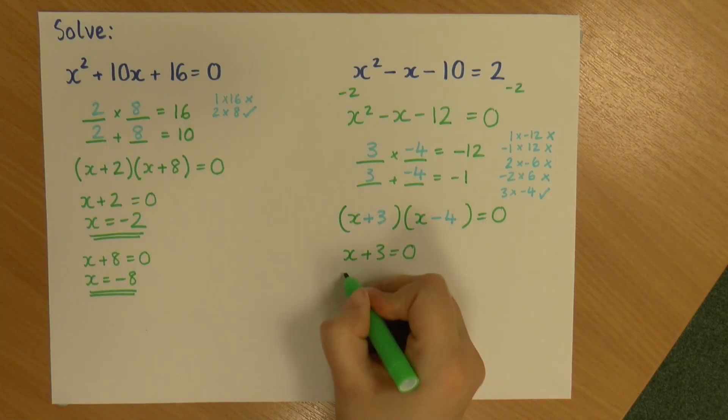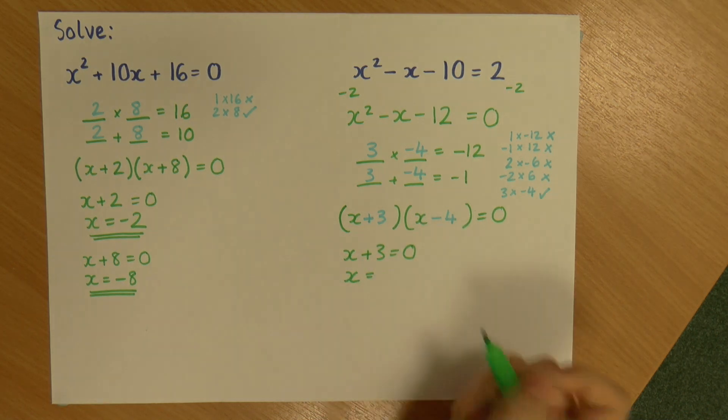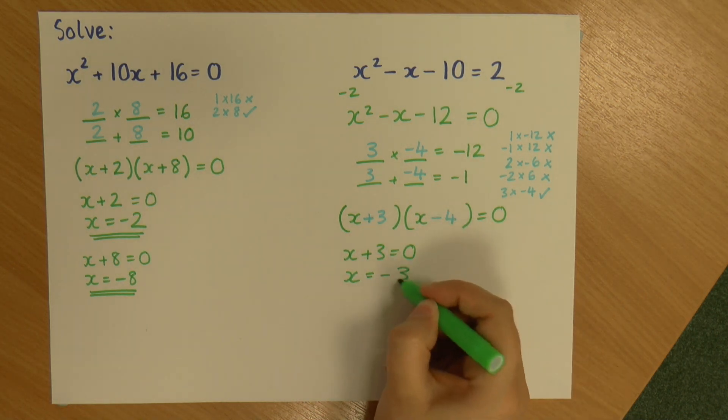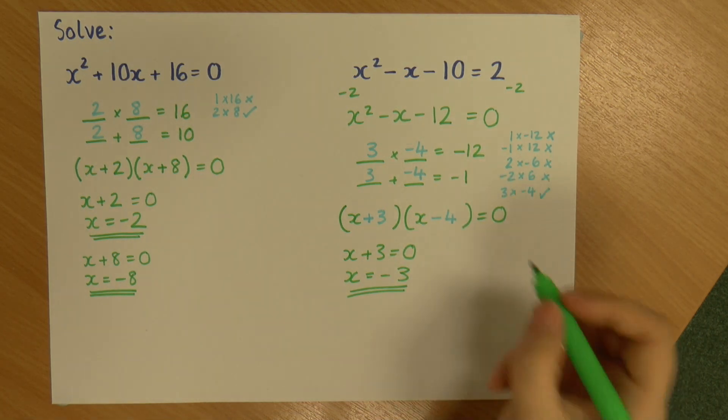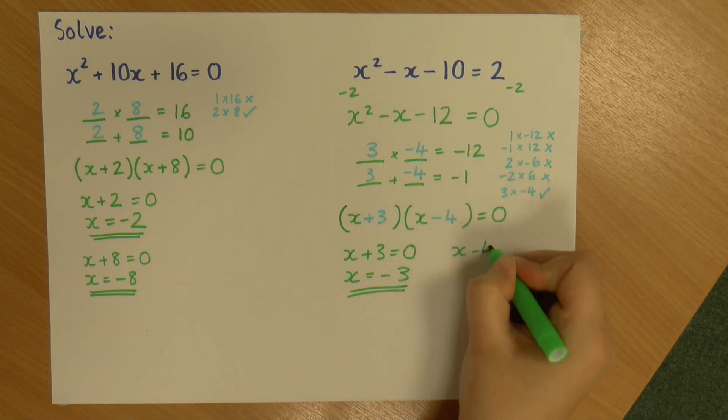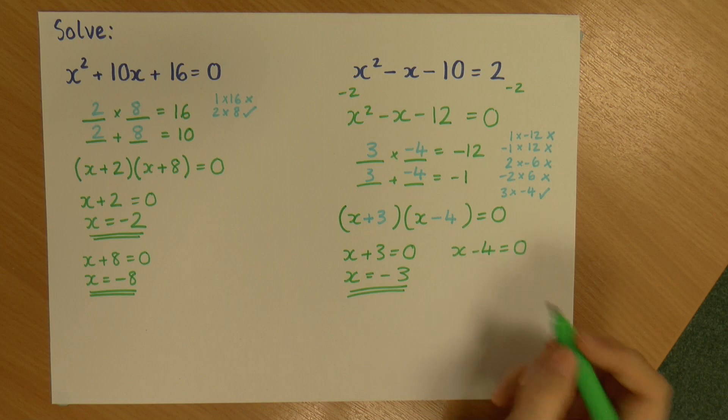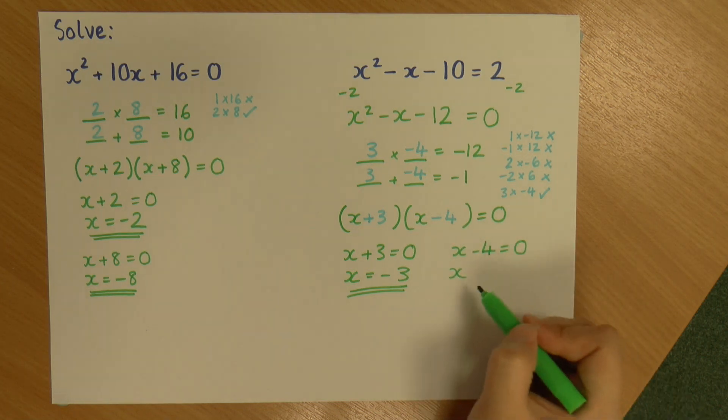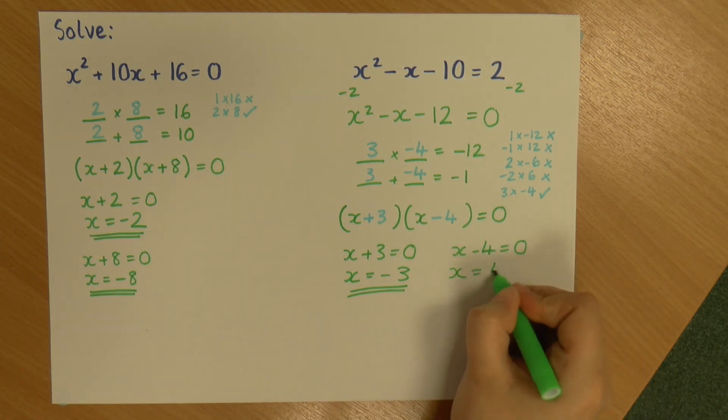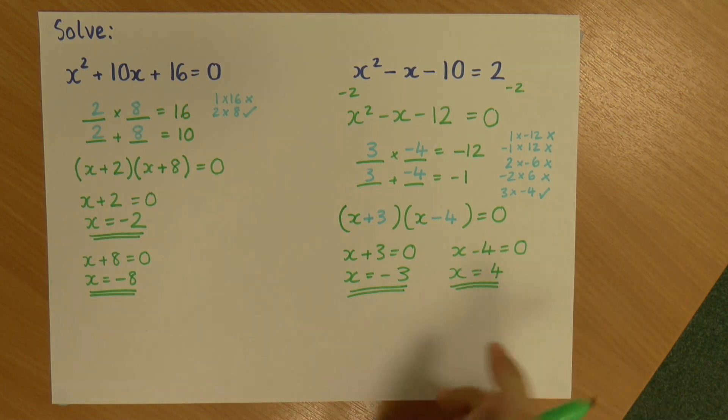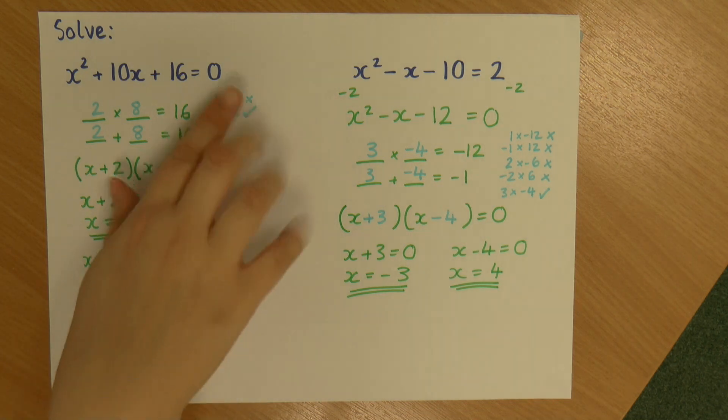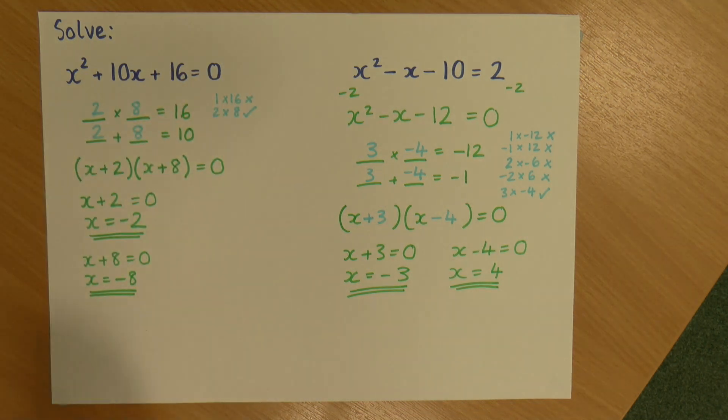So, x plus 3 equals 0. And we can just do the inverse sign. So, x is minus 3. And then on this side, x minus 4 is 0. Again, we can think about it of just doing the inverse sign. So, x is plus 4. And those are my two values of x. So, that is solving quadratic equations, where we have a lovely one that equals 0, and also those where we don't equal 0.